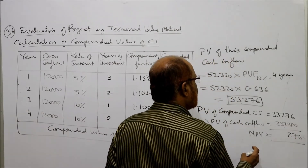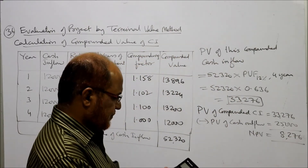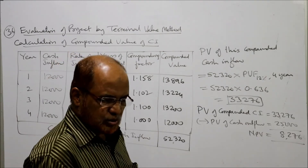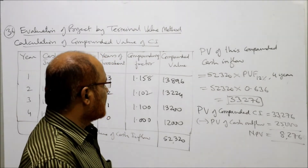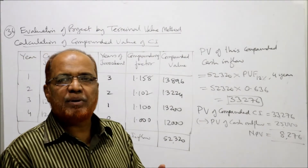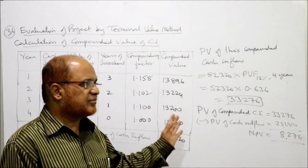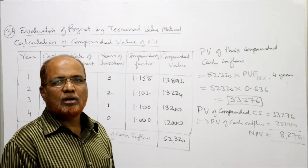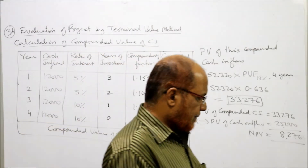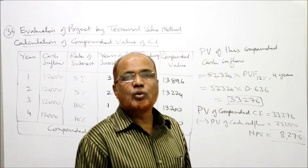Now we find the present value of this compounded cash inflow: ₹52,320 × PV factor at 12% for 4 years = 52,320 × 0.636 = ₹33,270. Less PV of cash outflow ₹25,000, giving net present value of ₹8,276. Since the NPV is positive, it is suggested to invest in this project according to the terminal value method.